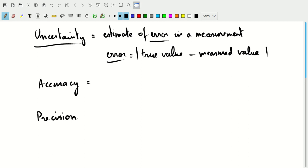Accuracy indicates how close our measurements are to the true value. If many measurements are close to the true value, then we have an accurate measurement.